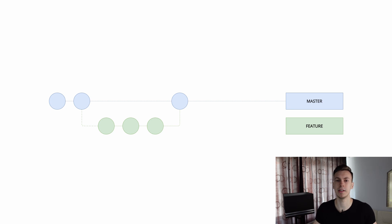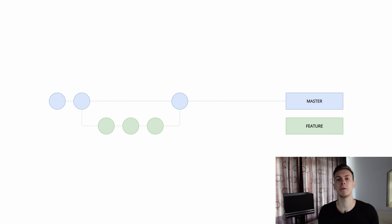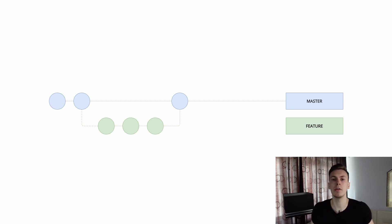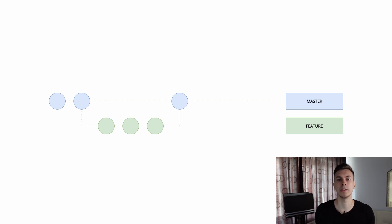Now let's talk about another flow — it's simpler than GitFlow and it's called GitHub Flow. You have master and feature branches and that's it. The advantages are that it's simple and you can deploy to production very often, which is exactly what we needed on one of my previous projects. If you need to test your feature before deploying, you can deploy the feature branch to a staging environment, and when you finish testing you merge the feature branch into master and deploy master to production.